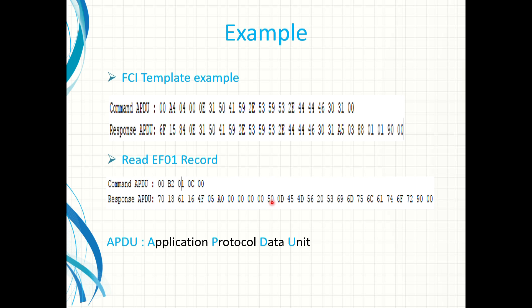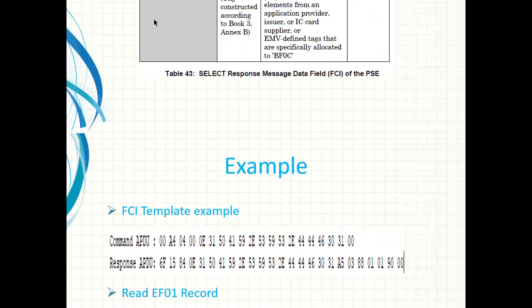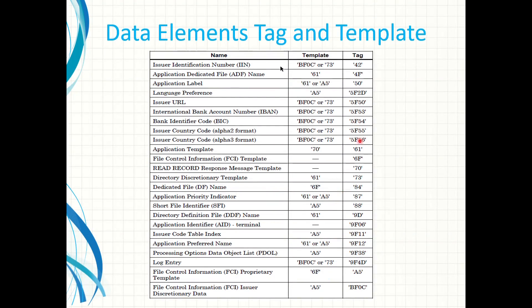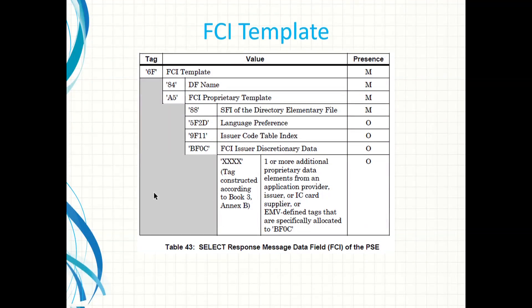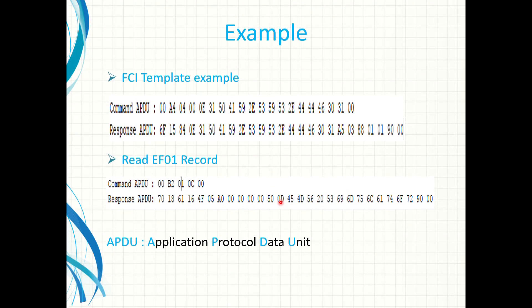So the following tag has an ID of 50. 50 should be the application label. And a length of 13 decimal and the following 13 bytes are just the application label. And if you translate this into ASCII you get the readable version and it is just the EMV simulator. And the last two bytes are the status bytes saying it's a successful command.